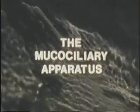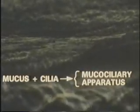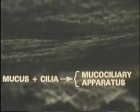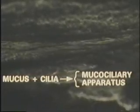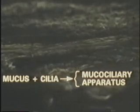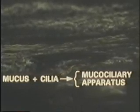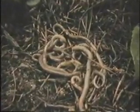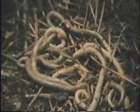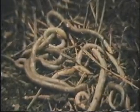The mucociliary apparatus. All the sequences used in this film are presented in real time — they are not speeded up or slowed down. In the background you can see the mucociliary apparatus at work. It consists of two main components: mucus and cilia. Mucus is a slimy, sticky material used by many different animal species. It serves as a lubricant and also provides a protective layer over moist, soft surfaces.